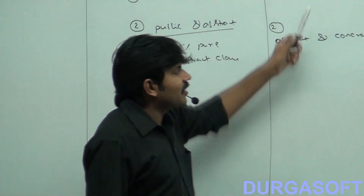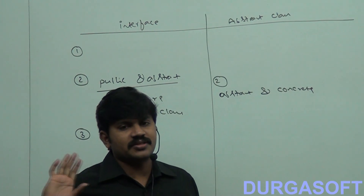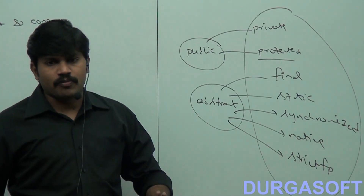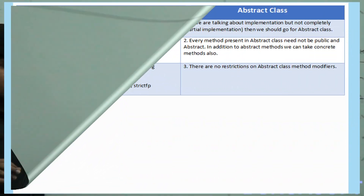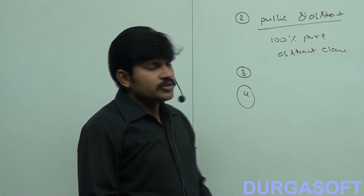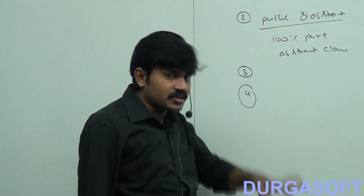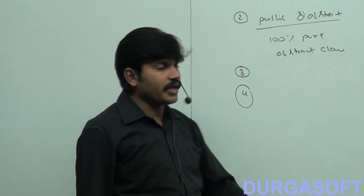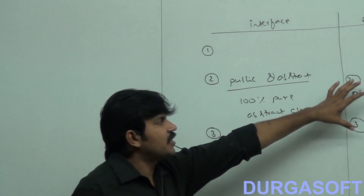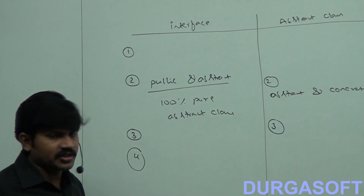But what about abstract class method modifiers? There are no restrictions at all. Abstract class methods can be private, protected, final, or static — no problem at all. So second and third points talk about interface methods: every interface method is always public and abstract, and we can't declare them with those modifiers. But there are no such restrictions for abstract class methods.